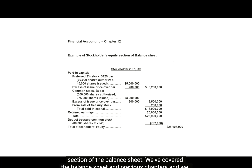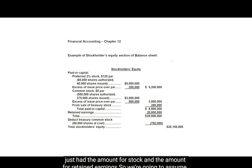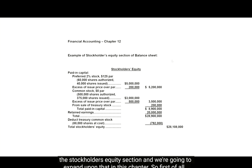We've covered the Balance Sheet in previous chapters. We know that the Balance Sheet has three parts: Assets, Liabilities, and Stockholders' Equity. But up until now, our Stockholders' Equity section of the Balance Sheet just had the amount for stock and the amount for retained earnings. So we're going to assume the Assets and Liabilities sections have already been done, and we're going to take a look at just the Stockholders' Equity section, and we're going to expand upon that in this chapter.